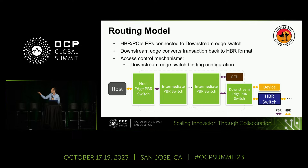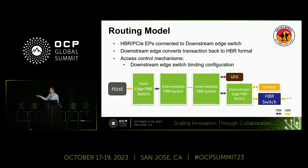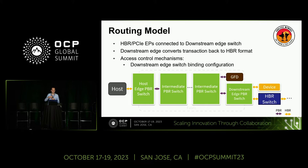If the traffic is bound for an HBR device — maybe that's an SLD type one, type two, type three device, maybe a PCIe endpoint, or an HBR switch with endpoints connected — that's going to be routed through the switch to what we call the downstream edge. It's the downstream edge's responsibility to convert that PBR transaction back to HBR format. The access control mechanisms here mirror what's happening at the host. That downstream edge port needs to be explicitly configured for that binding path. It's going to look at the source PID to determine which host is making the request, and it will have a configuration knowing whether that host has been configured to access the particular DPID.